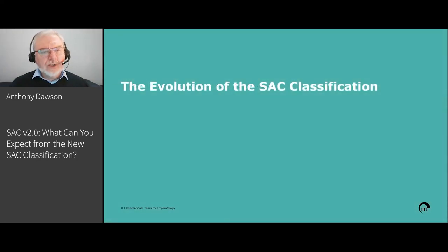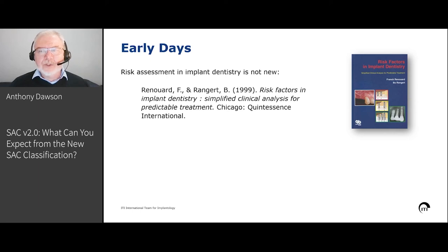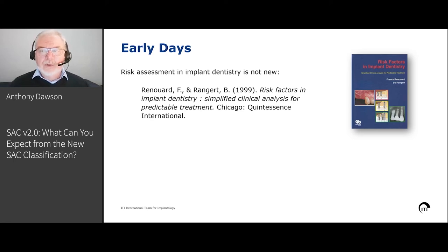Looking at the evolution of the SAC classification: risk management is not something new to implant dentistry. Renoir and Rangert published this pivotal book in 1999, so over 20 years ago, people were starting to think about the risks associated with implant treatments and how we might avoid them or overcome them. Renoir and Rangert looked at a system which identified high, moderate and low risks.